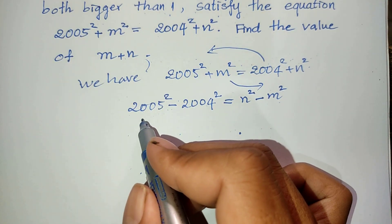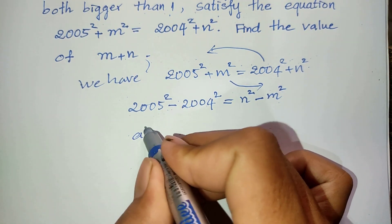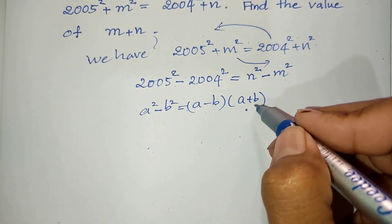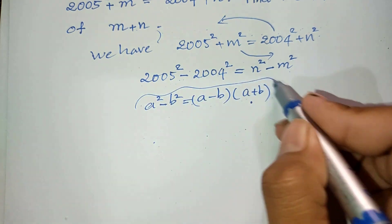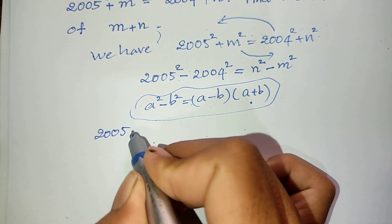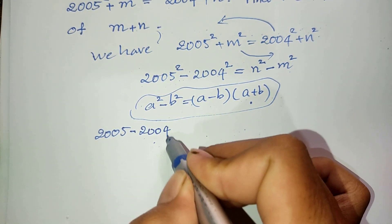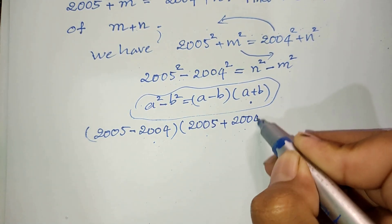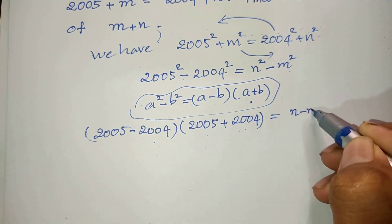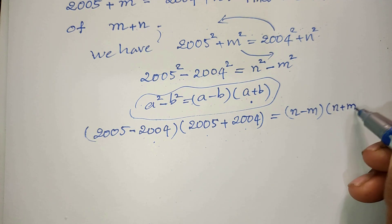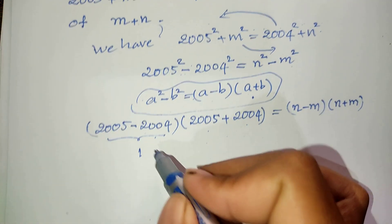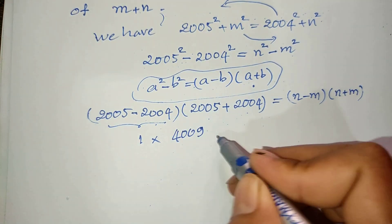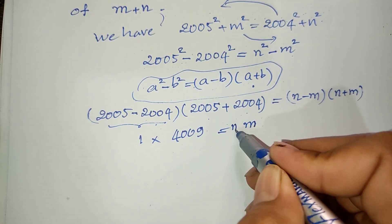Now we use the rule that a² minus b² equals (a minus b) multiplied by (a plus b). So now we get: (cos(5°) minus cos(4°)) multiplied by (cos(5°) plus cos(4°)) equals (n minus m) multiplied by (n plus m).